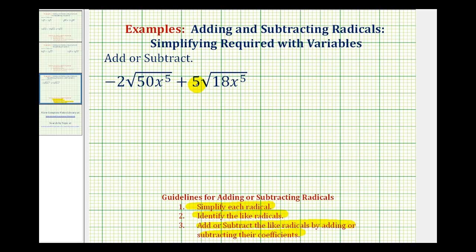For our example, the first step is to simplify the square root of 50x to the fifth and the square root of 18x to the fifth. And because these are square roots, we want to identify the perfect square factors.